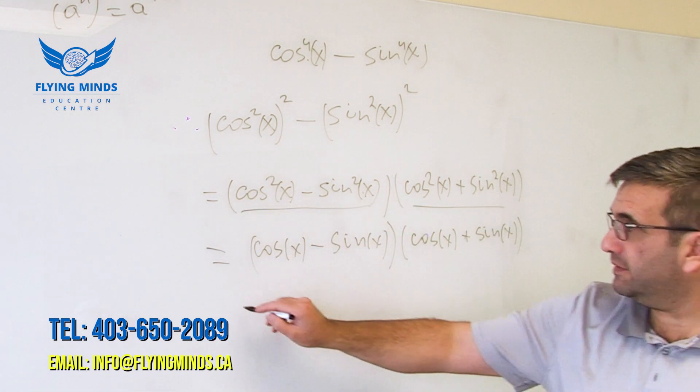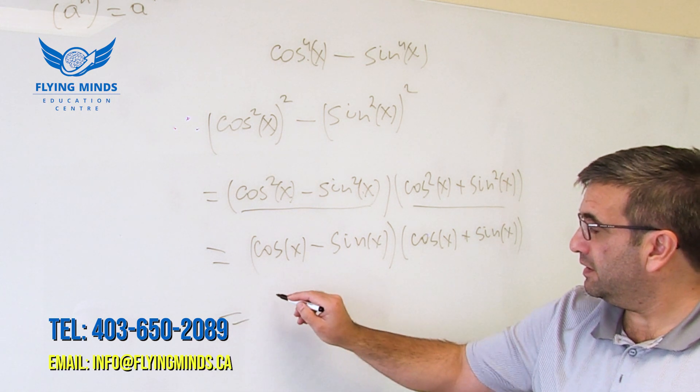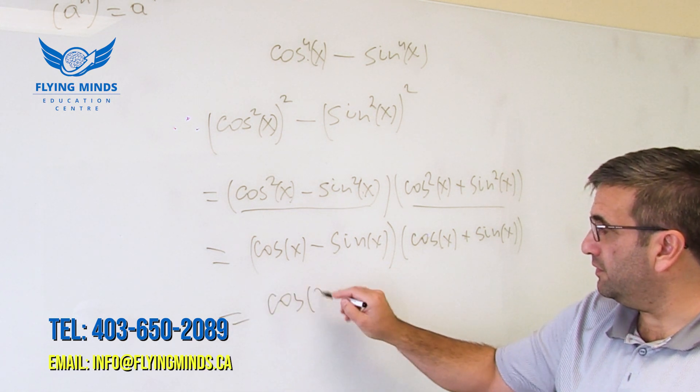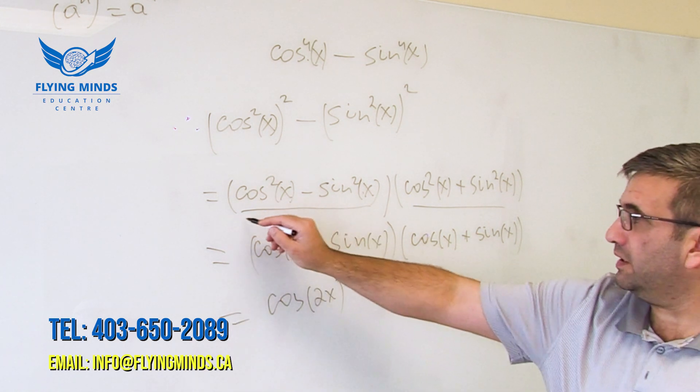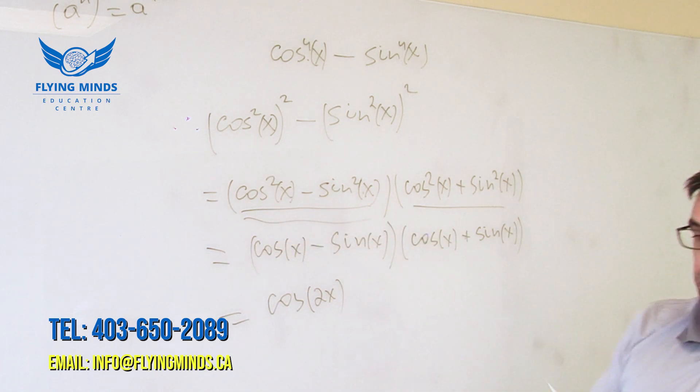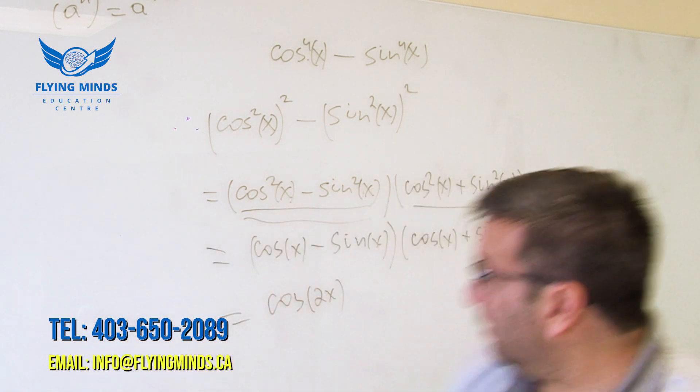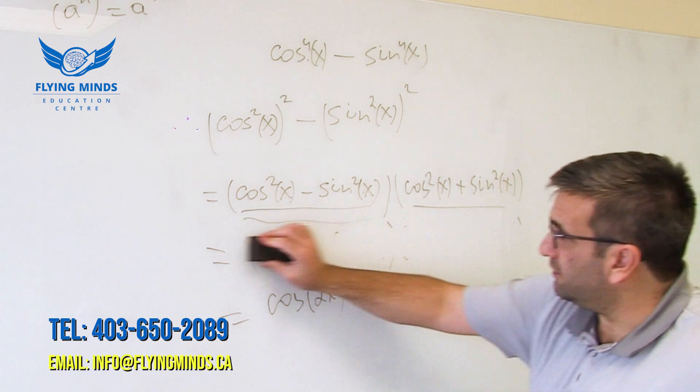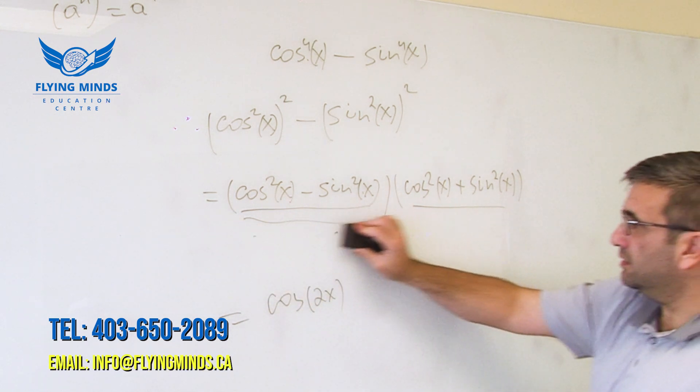This formula is cosine of double angle right here. So we basically, we did too much. This isn't going to help us.